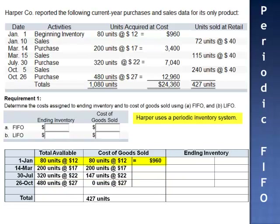Cost of goods sold: $960 plus $3,400 plus $3,234. Total cost of goods sold: $7,594.